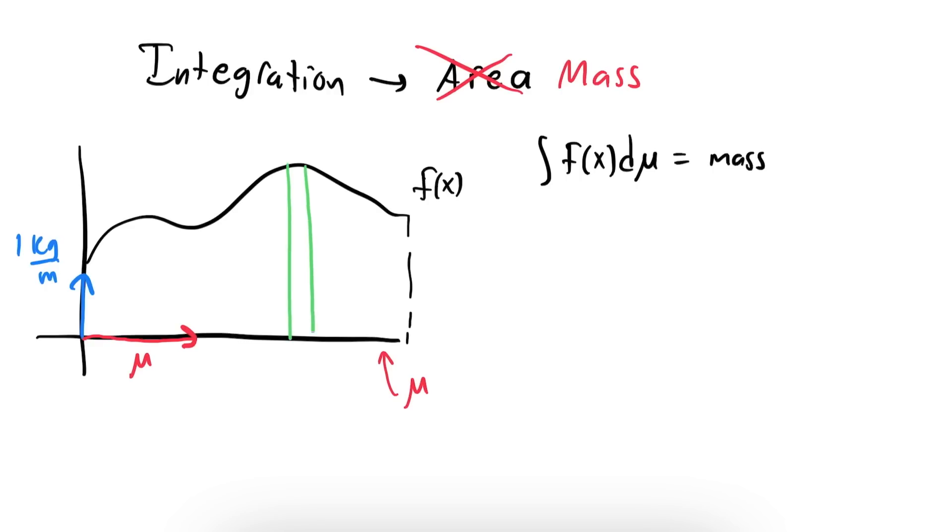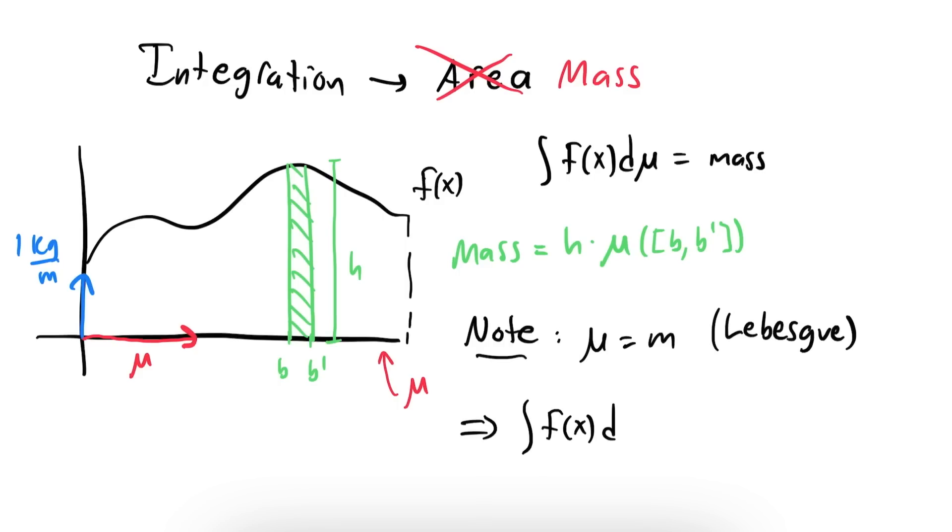For example, a rectangle with height h and base given by the interval [b,b'] will have a mass of h times μ([b,b']). As a special case, when μ is the Lebesgue measure m, which, recall, just measures the length of a set or an interval, we get the integral we're all familiar with, and instead of writing dm, we usually just write dx.